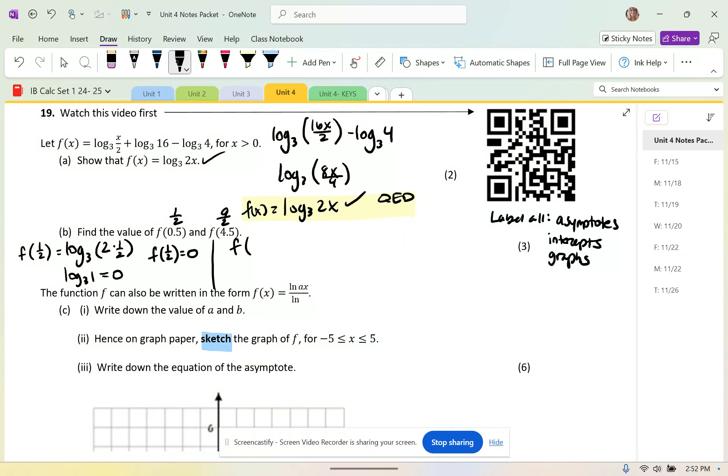Then I've got f of 9 over 2, and that's going to be log base 3 of 9 over 2 times 2 over 1. These cancel, and I get log base 3 of 3 squared, which is equal to 2. So now I have f of 9 over 2 equals 2. These are my two answers here.